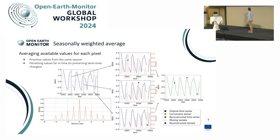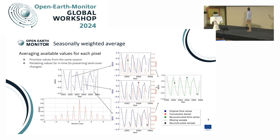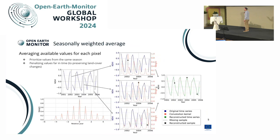Here is a sketch of how it works. We take the time series of the original data — this particular pixel has three missing values. For each missing value, we reconstruct it by giving more weight to available values from the same seasonality, and a lower weight based on distance in time, to avoid propagation of land cover changes. Overall, we always get a complete time series. Depending on the application, this is good enough. But of course, if there are artifacts or outliers in the time series that were not filtered, they will also be propagated in the reconstructed images.